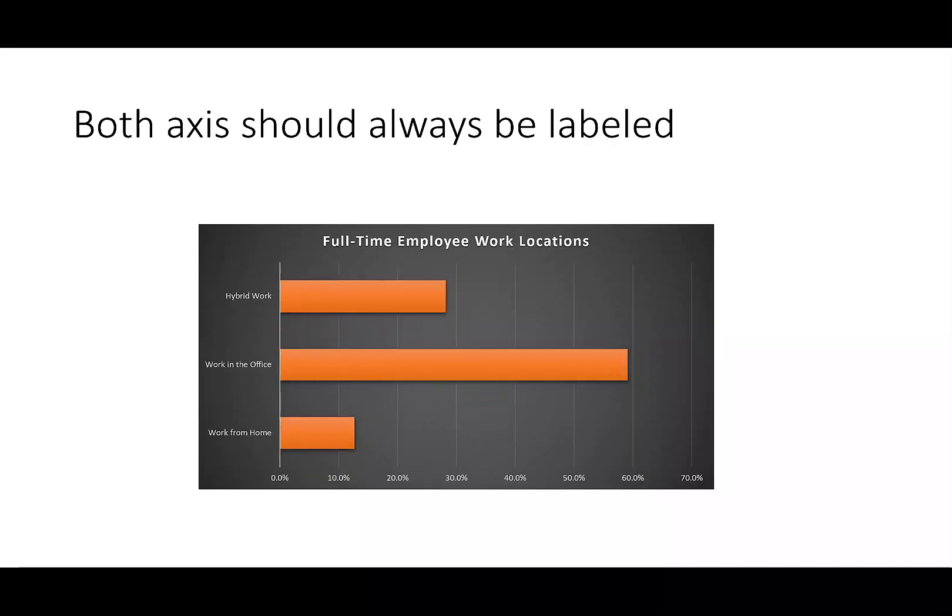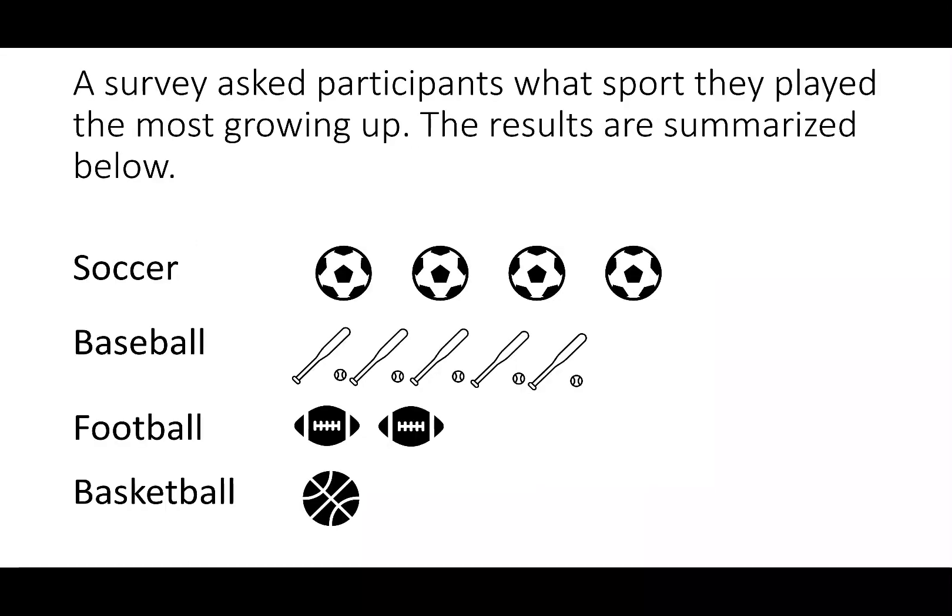Putting a scale on the horizontal axis gives us a way to properly interpret the data. Now you can see that working in an office is close to 60%, working from home is just over 10%, and hybrid work is under 30%. Our next graph says a survey asked participants what sport they played the most